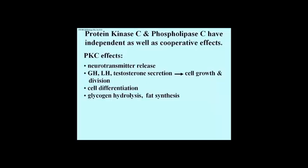Protein kinase C and phospholipase C mediate some common response pathways, but also have some independent effects noted on this slide. Specific examples of protein kinase C effects include the release of neurotransmitters from nerve cells, cellular differentiation, participation in glycogen breakdown and fat synthesis in different tissues, as well as the secretion of hormones from endocrine glands such as growth hormone and LH, which is luteinizing hormone, from the pituitary gland and testosterone from the testes. These hormones are mitogenic — that is, they stimulate cell division in their own target tissues.